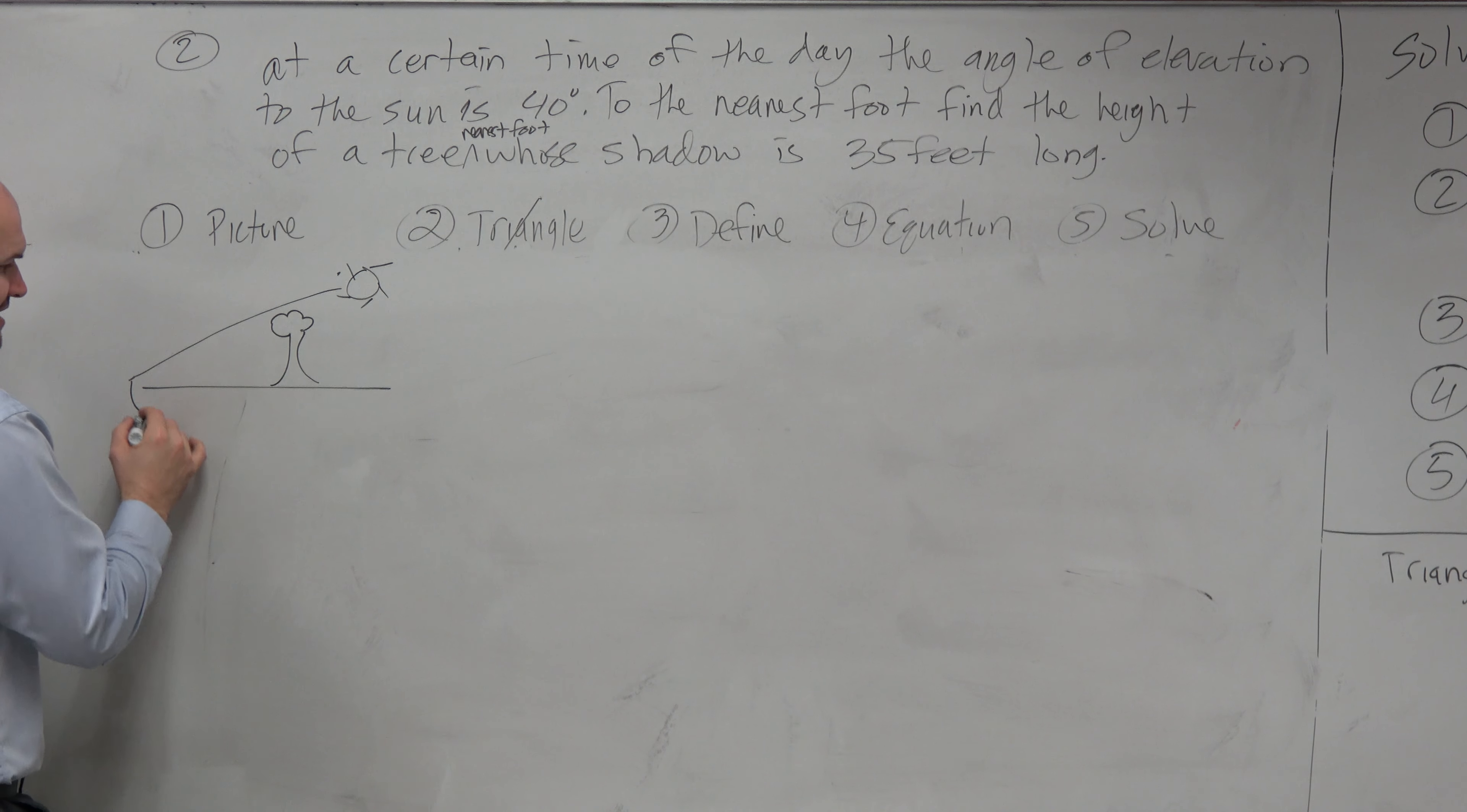And the distance of that shadow is obviously going to be 35 feet, right? And we have an angle of elevation, which is 40 degrees. And therefore, that is basically the situation.